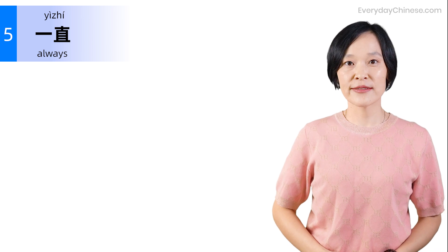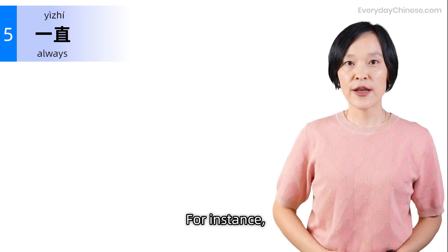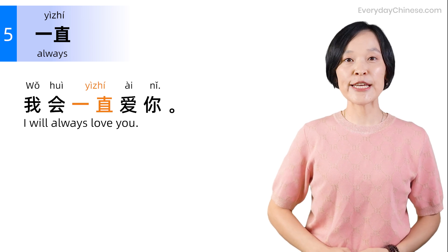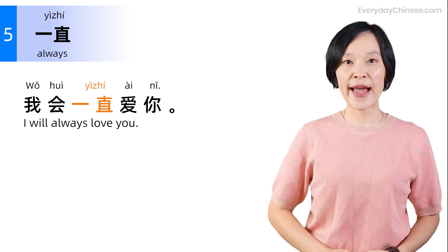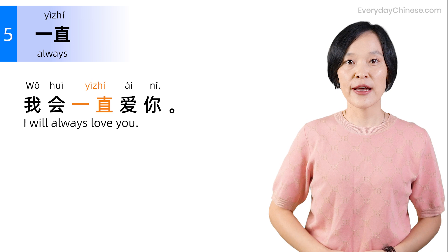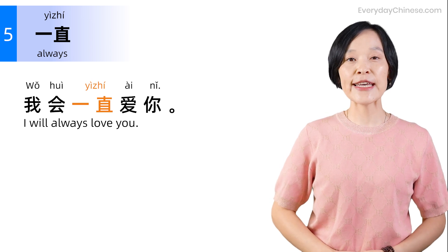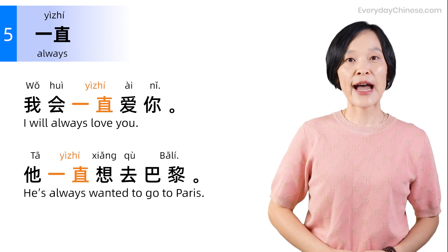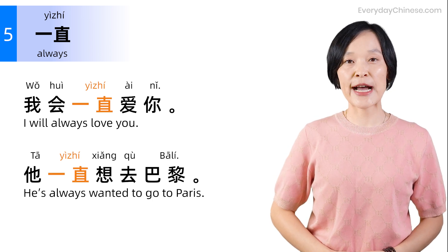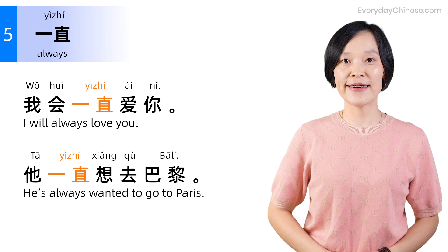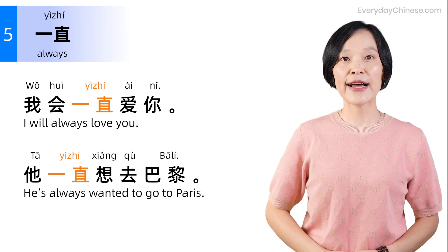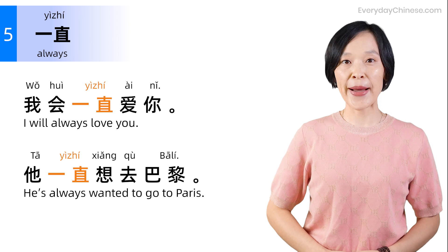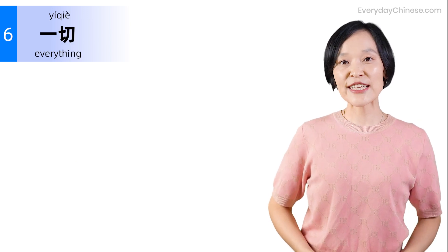Next one: 一直, meaning always. For instance: 我会一直爱你 (I will always love you). 他一直想去巴黎 (He has always wanted to go to Paris).